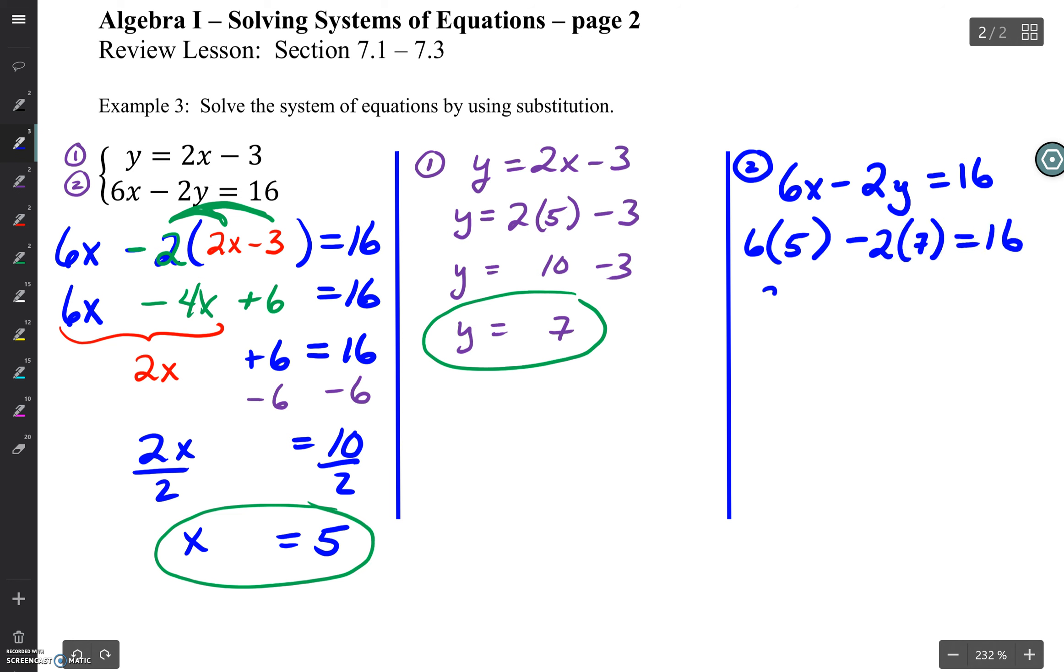You know that 6 times 5 is 30, and you know that 2 times 7 is 14. The question is, does 30 minus 14 equal 16? Well, it does, so I'm going to put a checkmark there.